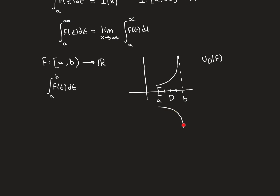In contrast, for a function unbounded below — unbounded in the negative direction — the upper Riemann sums are fine and it's the lower Riemann sums that have problems. For the last subinterval, the supremum is fine, but the infimum doesn't exist because the function is unbounded below. So the lower Riemann sums fail in this case. The overall point is that whether the function is unbounded above or below, the Riemann integral definition fails because either the upper or lower Riemann sums are not defined for all dissections.